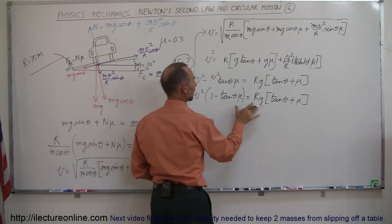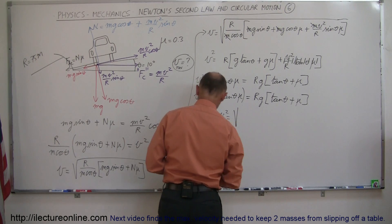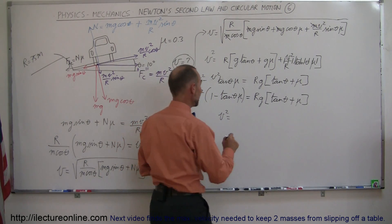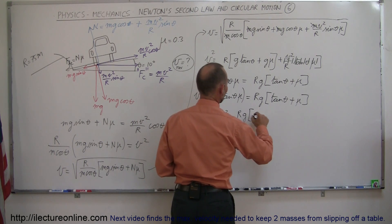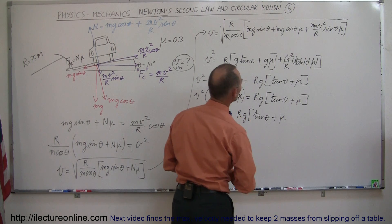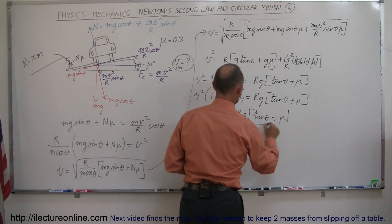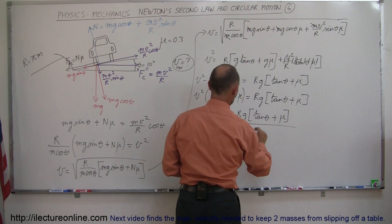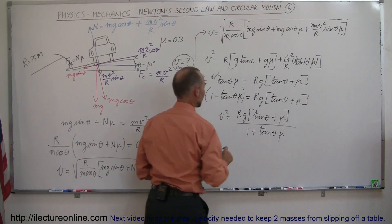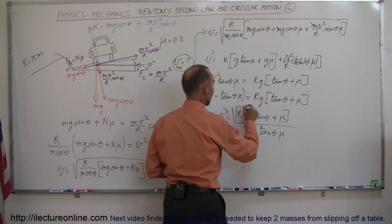Dividing both sides by (1 minus tangent theta times mu), I get v² equals rg times (tangent theta plus mu), all divided by (1 minus tangent theta times mu). Wait — it should be 1 plus tangent theta times mu in the denominator. Taking the square root of both sides gives the final formula for maximum velocity.